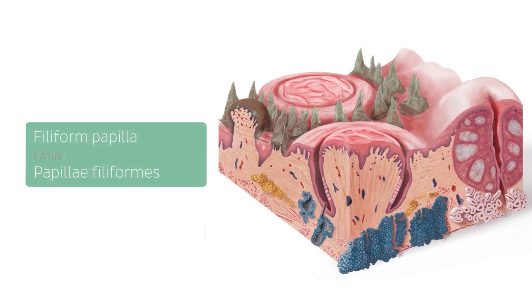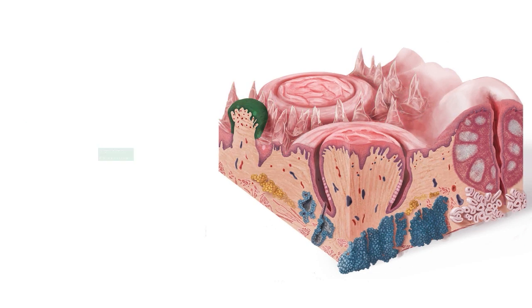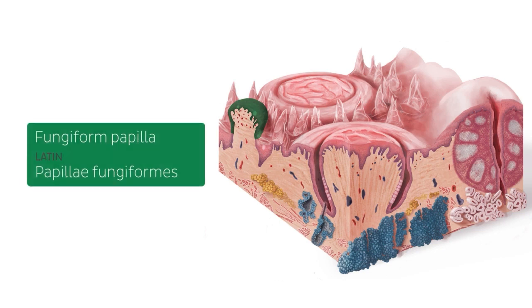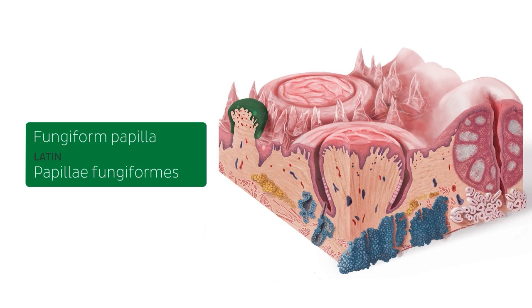Now let's look at the fungiform papillae. The fungiform papillae are more sparse than the filiform papillae and are larger and rounded in shape. In fact, their name relates to their mushroom-like shape that you can see here. They are mostly found on the tip and the sides of the tongue and contain taste buds on their upper surface.